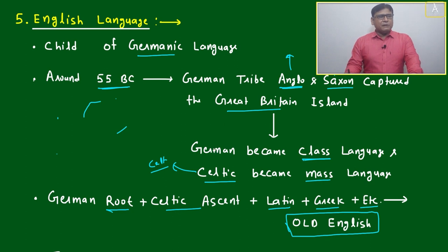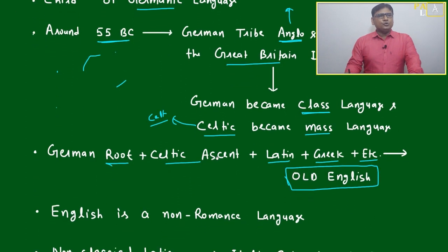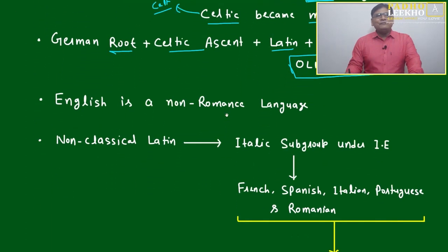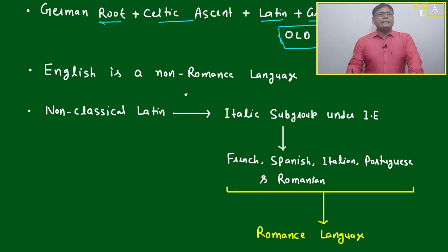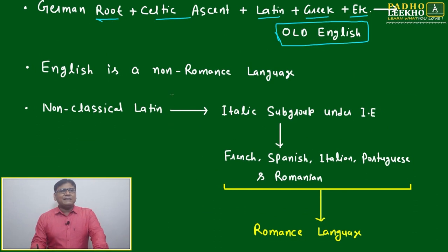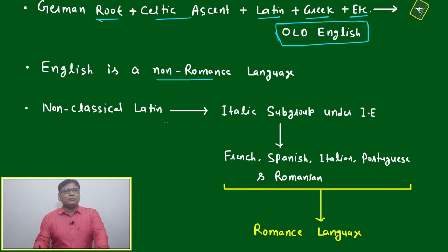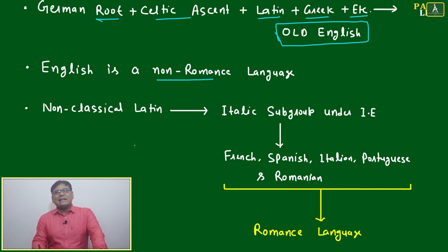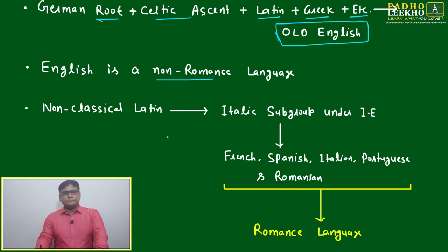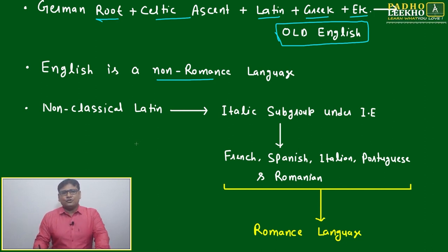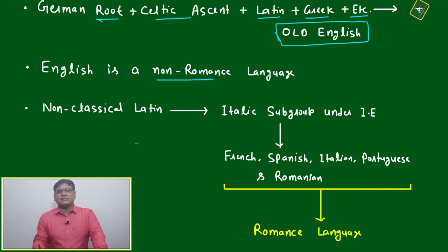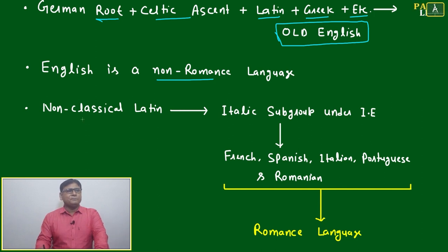English language is heavily influenced by Germanic language. English is a non-Romance language. We are calling it a non-Romance language because Romance languages have certain considerations, and without those considerations a language is not considered to belong to the Romance family.